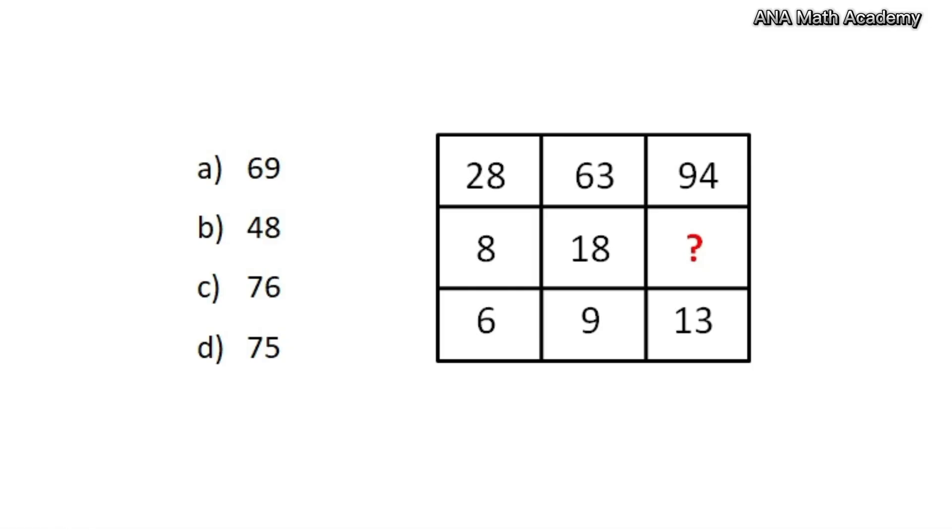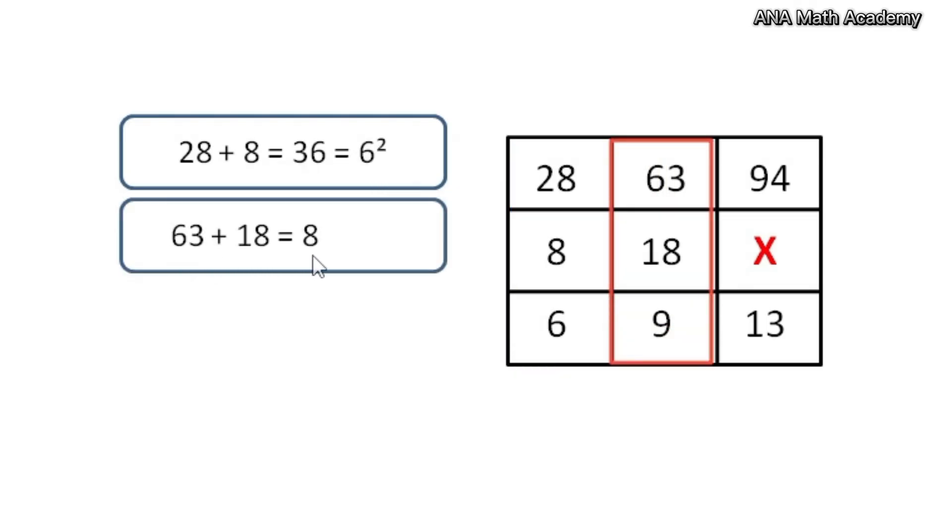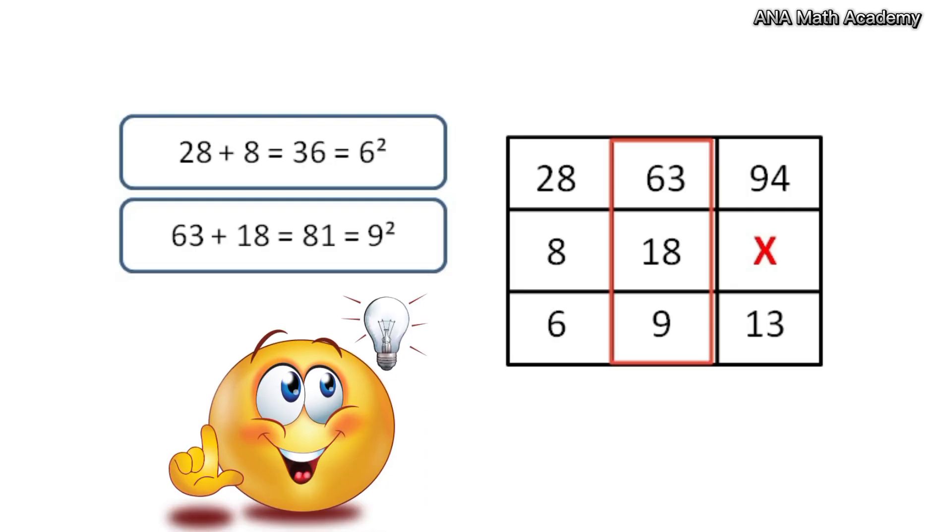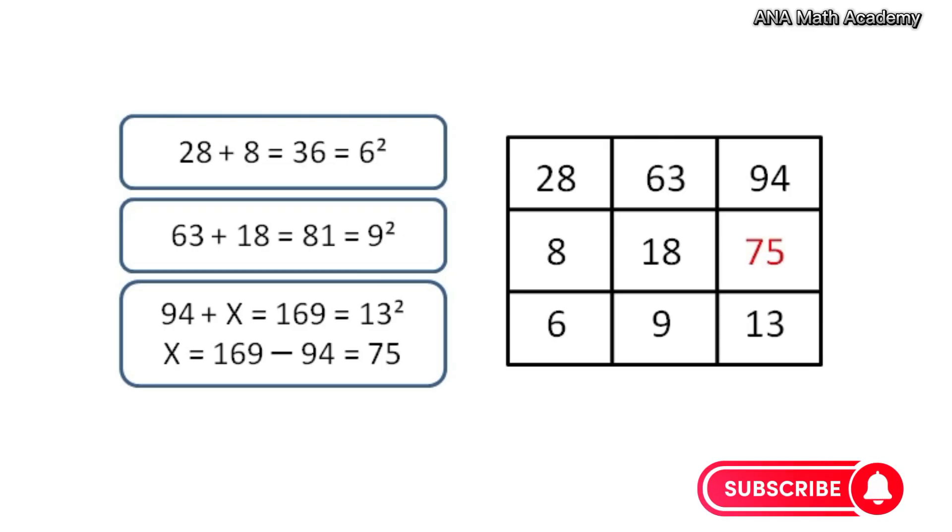Now let's see the next question. Hmm, interesting, try this question guys. Did you get the answer? Okay, then check if it is right or wrong. If we add 28 and 8 we get 36, which is the square of 6. And the sum of 63 and 18 equals 81, which is square of 9. Wow, we got the right pattern! Now we will apply the same pattern here. Suppose this is x: 94 plus x equals 169 because it's the square of 13. X equals 75. So 75 is the right answer.